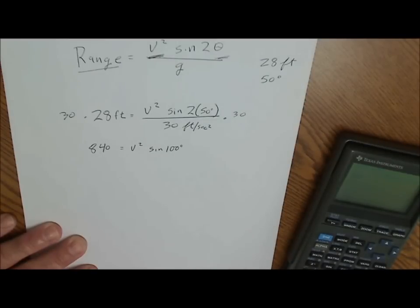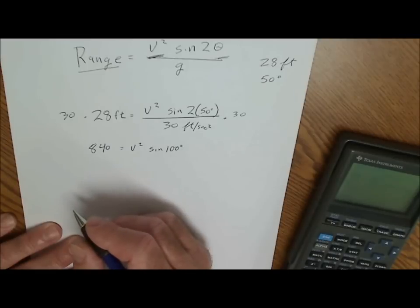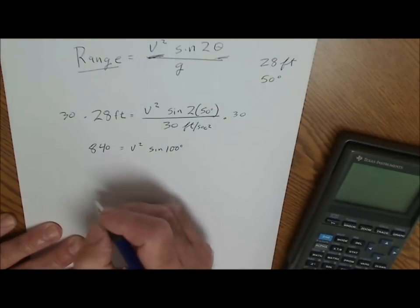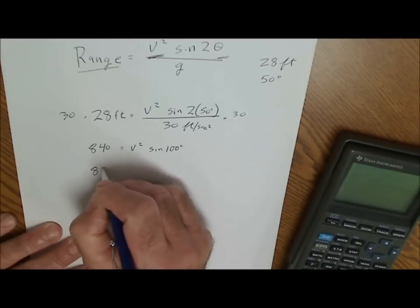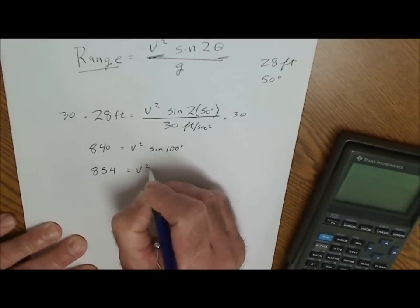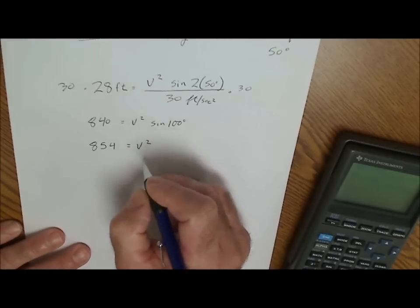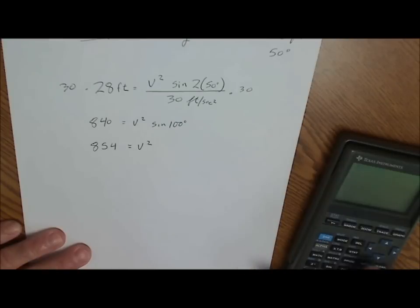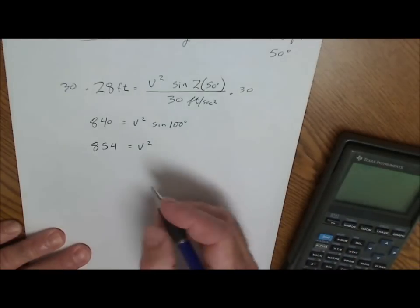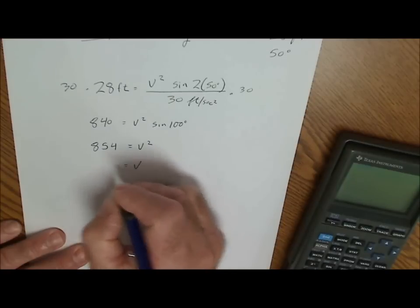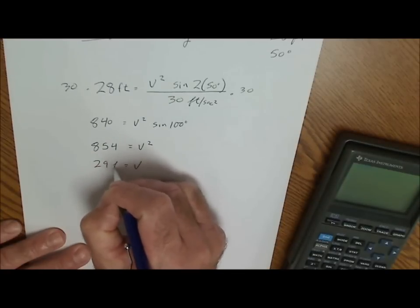Then divide both sides by sine of 100. So 840 divided by 0.984, which is the sine of 100, gives me 854. So 854 is equal to velocity squared. Again, solving for v, I take the square root of both sides. So the square root of 854 and I get a velocity of 29 feet per second.